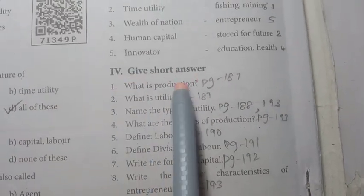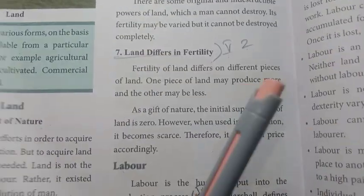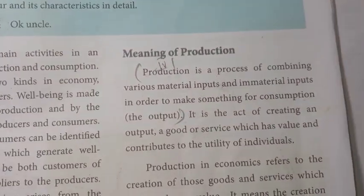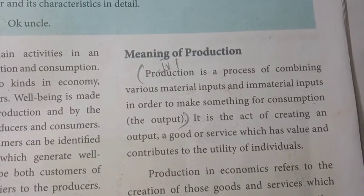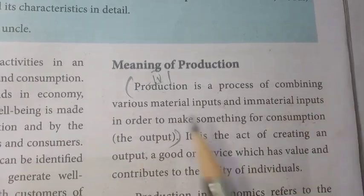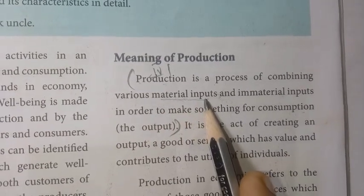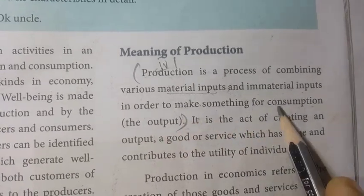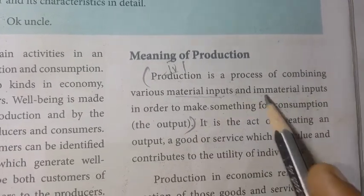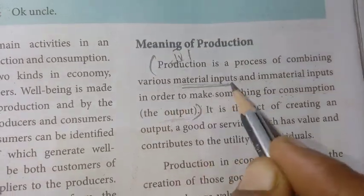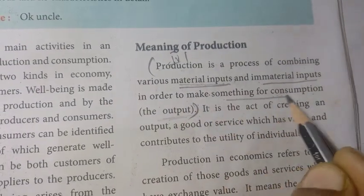Roman numeral 4: Give short answers. First one: What is production? Page number 187. Production is a process of combining various material inputs and immaterial inputs in order to make something for consumption - that is, the output. So production is a process of combining material inputs to create the output.